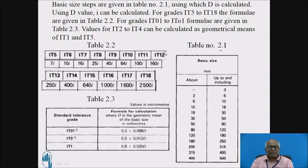Now while D is expressed in mm, the value of I will be in microns. This is standard tolerance unit. For getting the actual value of tolerance, we have to use again table 2.2 which specifies the formula for IT5 to IT18 in terms of I. For example, IT5, the amount of tolerance will be 7I, IT6 10I, like that in terms of I, the amount of tolerance is specified.